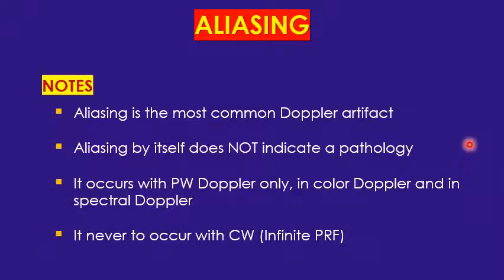Aliasing is the commonest Doppler artifact. Aliasing by itself does not indicate pathology, because sometimes aliasing happens if you set the PRF or scale lower than it should be — so the aliasing is induced by the sonographer, not meaning there is stenosis or pathology in the vessels. It occurs with pulse wave Doppler only — both pulse wave Doppler waveform and color Doppler — not with continuous wave.